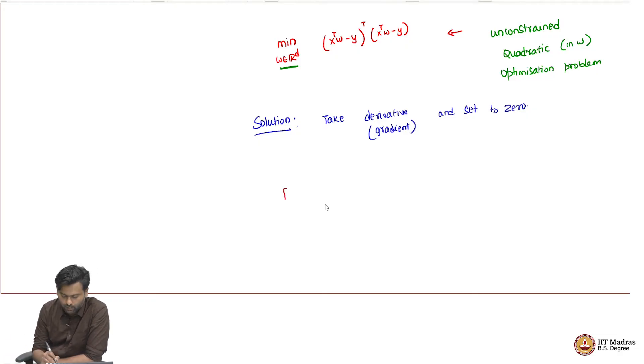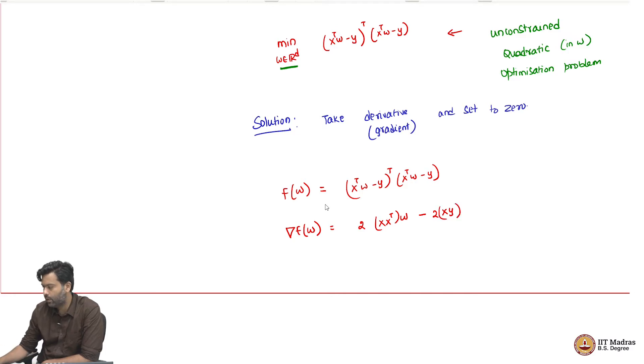Let me take the gradient. I am going to think of this as some function of W, which is X transpose W minus Y transpose X transpose W minus Y. I will take the gradient. This is the symbol for gradient, which is just a vector of partial derivatives with respect to each component of W. You can think of it as I am fixing one component WI and then treating all the other components as constants and trying to take the derivative, and then collecting all those derivatives in a vector. If you do that, and this is an exercise you should try, we would get something like 2XX transpose W minus 2XY.